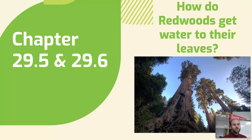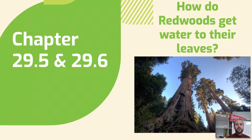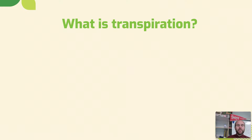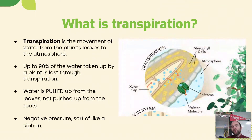Hey there, AP Bio, and welcome back to our lecture for chapters 29.5 and 29.6. We're just doing a small part of this chapter because we're just focusing in on transpiration as we're talking about properties of water. Transpiration is going to answer the question of how big old redwoods get water from the ground all the way up to their leaves for photosynthesis. So transpiration is that movement of water from the ground where they suck it up, up to their leaves, and then out into the atmosphere.